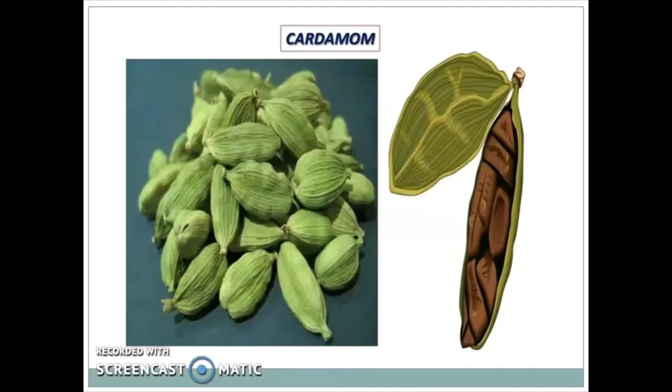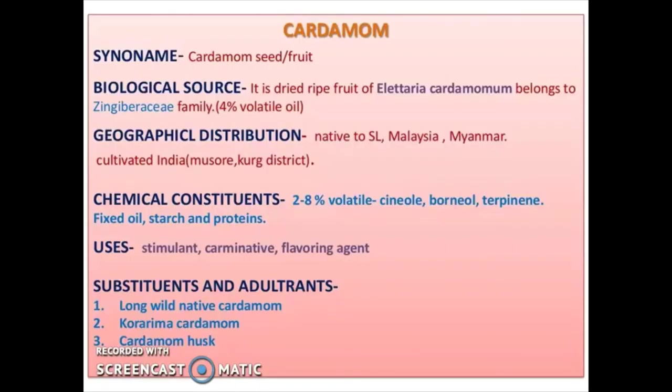Next is Cardamom. Synonym: cardamom seed and fruit. Biological source: it is the dried fruit of Elettaria cardamomum, belonging to the family Zingiberaceae. It contains 4% volatile oil. Geographical source: native to Sri Lanka, Malaysia, and Myanmar; cultivated in India in Mysore and Coorg district.